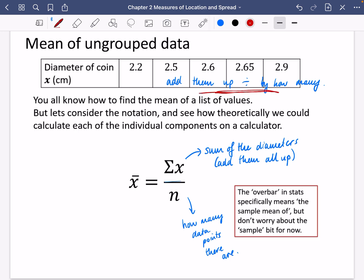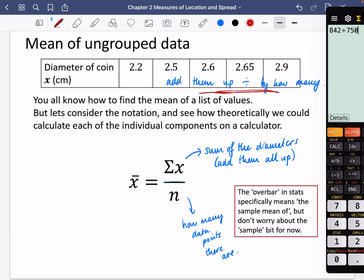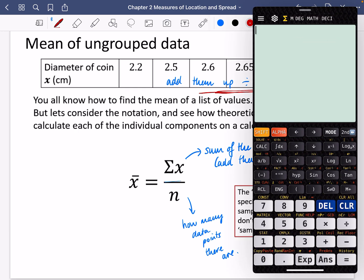It's exactly the same thing that we were talking about at the top. So I could do this on my calculator. I could just do 2.2 plus 2.5 plus 2.6 plus 2.65 plus 2.9, which is 12.85. And I could divide it by how many there are, and there's five here. So my average value is 2.57. But I'm going to learn how I can do this in a calculator instead.